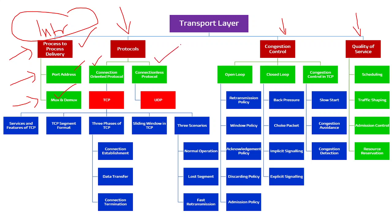Under protocols in the transport layer, we are going to see two kinds: connection-oriented protocol and connectionless protocol. Under connection-oriented protocol we are going to discuss TCP. Under connectionless protocol we are going to discuss UDP — User Datagram Protocol — where we will just see the format of UDP. We will concentrate mostly on TCP: its services and features, TCP segment format, and the working principle of TCP — the three phases: connection establishment, data transfer, and connection termination.